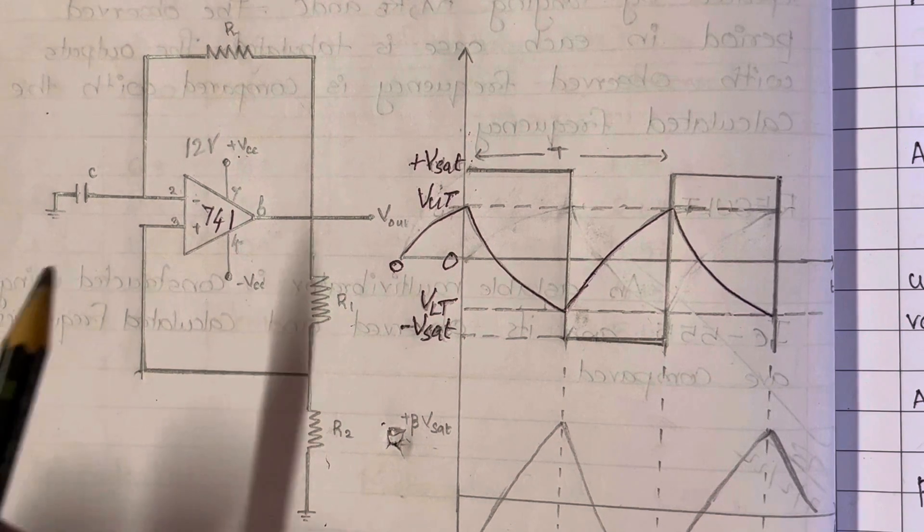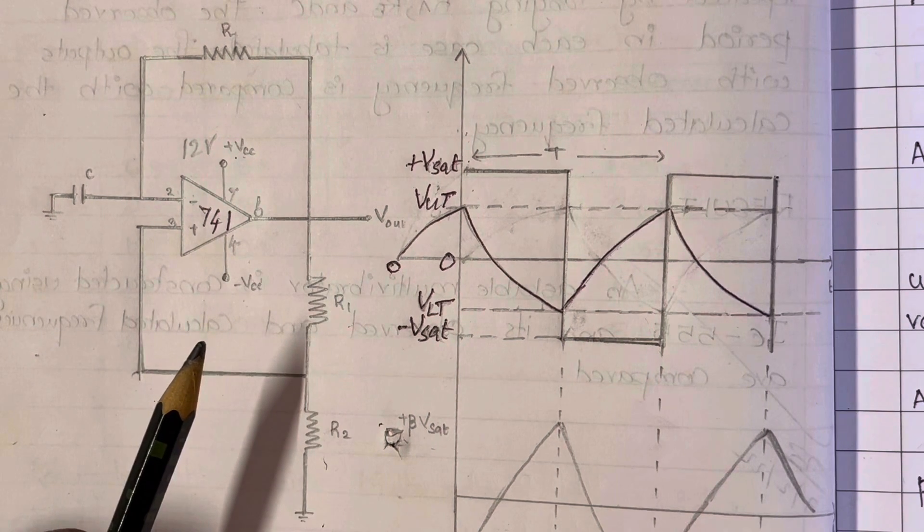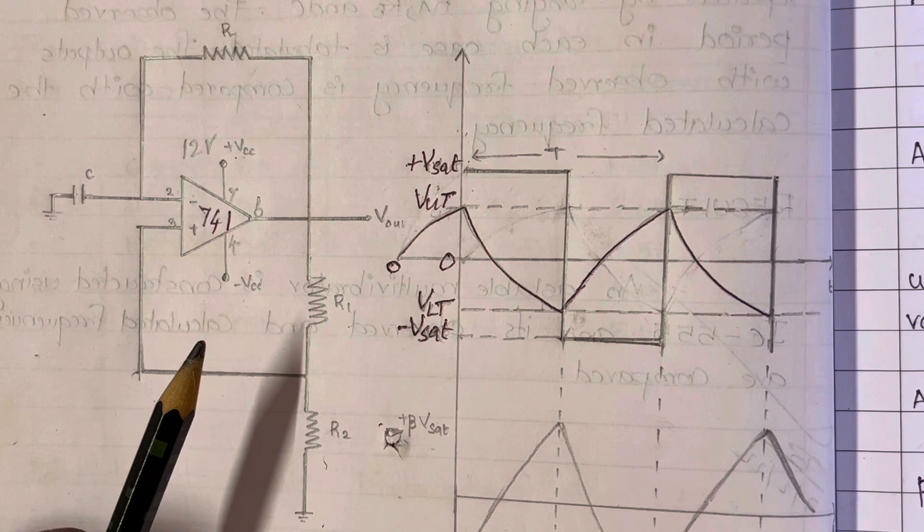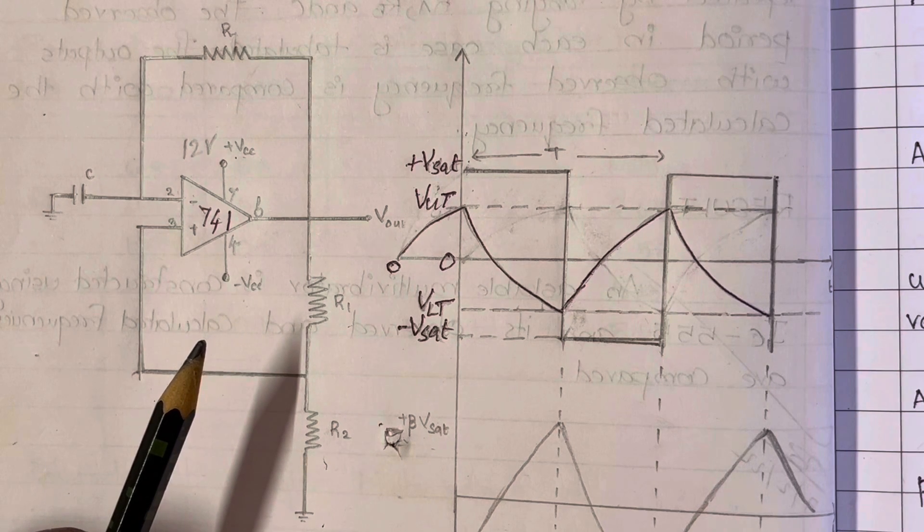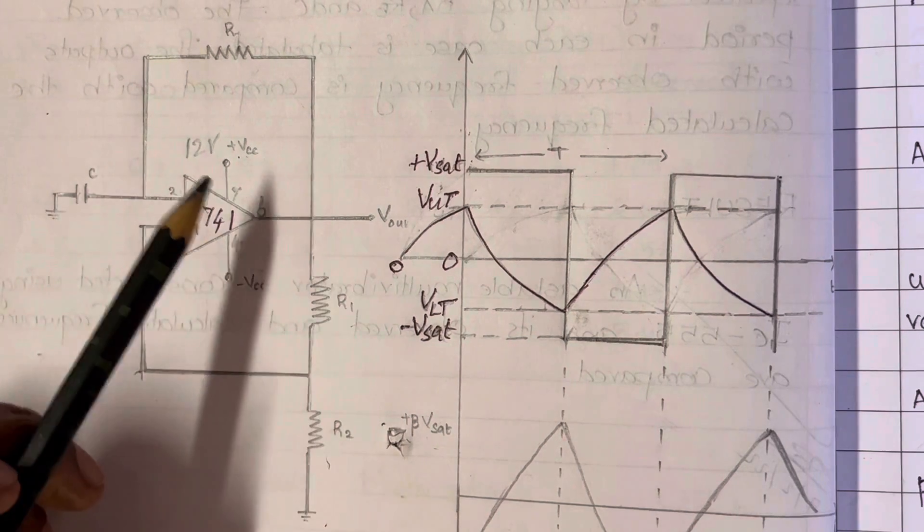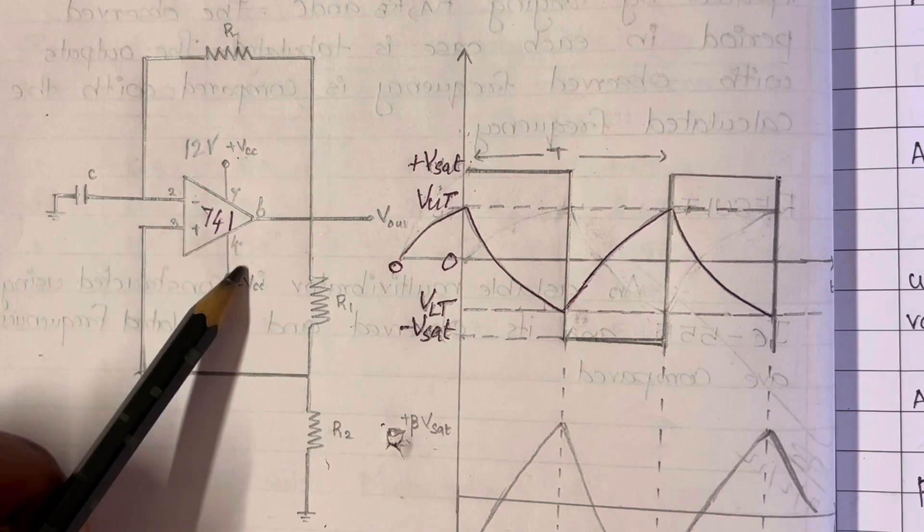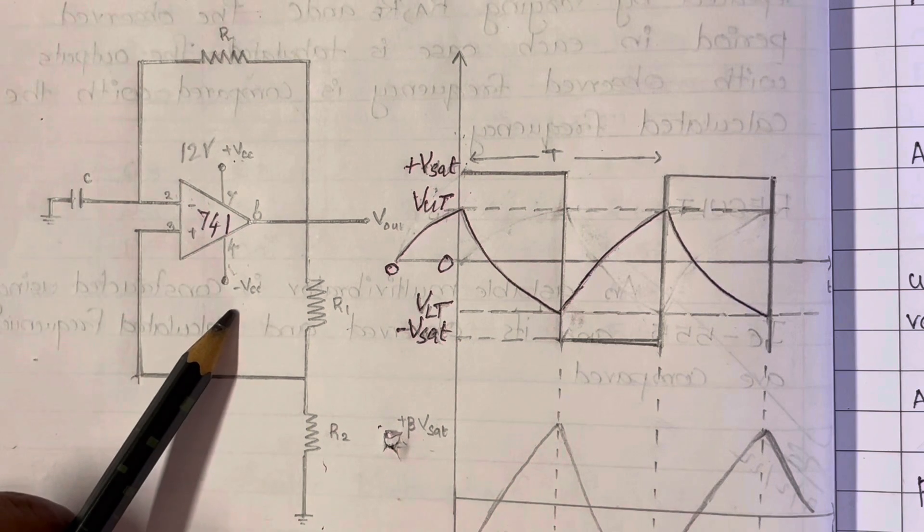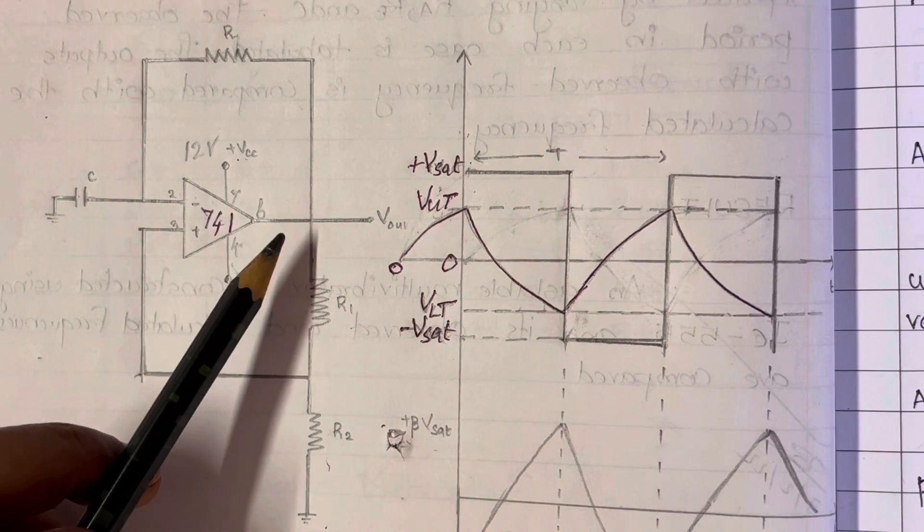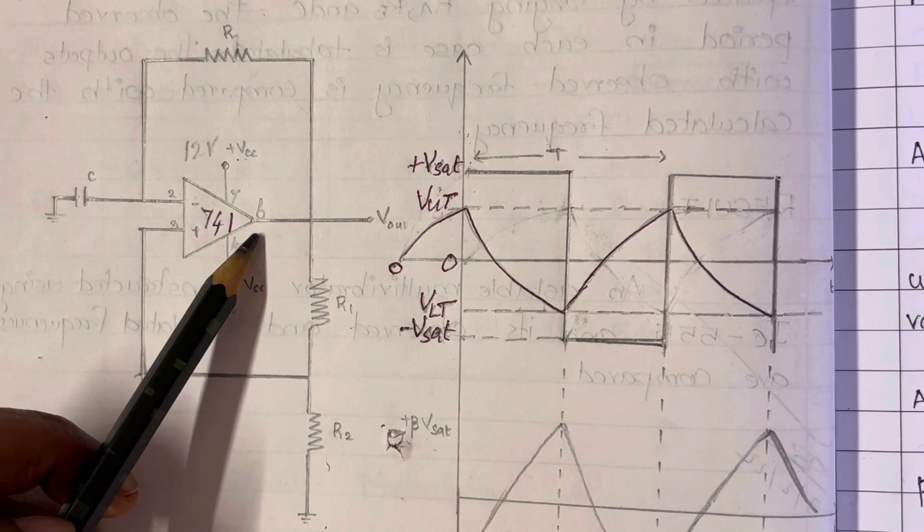You must be familiar with the pin configuration of IC741, it is an 8 pin configuration. Here we have to use the dual supply system. For that we have two terminals 7 and 4, respectively for plus VCC and minus VCC, and output is taken from pin 6.